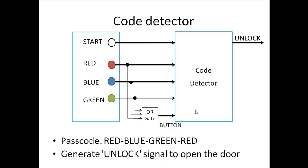For this system that we are going to design, let us assume that the passcode is going to be red, blue, green, and red. That means to unlock the door, we are going to press red first, then blue, then green, and then red a second time for the door to open. If we enter any other sequence of inputs other than red, blue, green and red, we are not going to get an unlock signal. So the first press is the start button, then we need to enter red, blue, green and red again for the system to issue an unlock pulse.